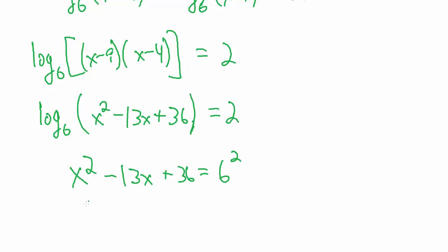If we simplify a little bit we get x squared minus 13x plus 36 equals 6 raised to the power 2 is 6 times 6 which is 36. So that's kind of nice. We have a 36 here and a 36 here so those are going to cancel out.